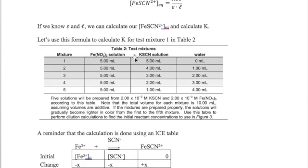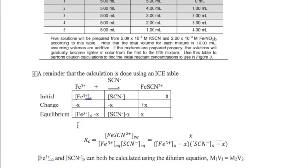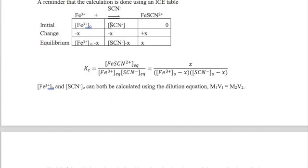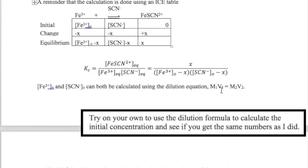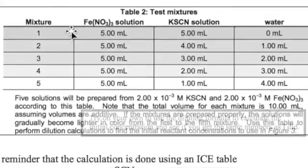Let me show you how to do this with mixture 1 from one of the five mixtures in table 2. Recall the ICE table setup and how we will calculate the K value. The initial concentration of both iron and thiocyanate in this case can be calculated using the dilution equation M1V1 equals M2V2 using values from table 2 for mixture 1.